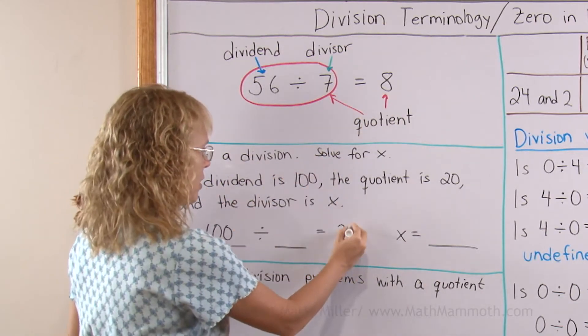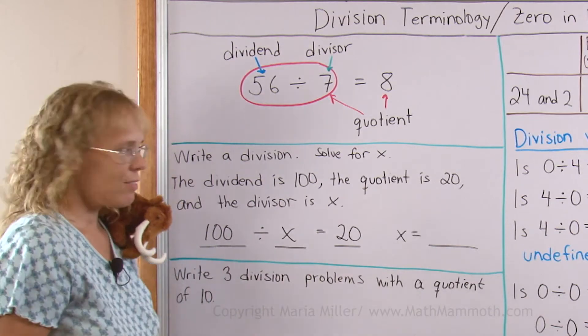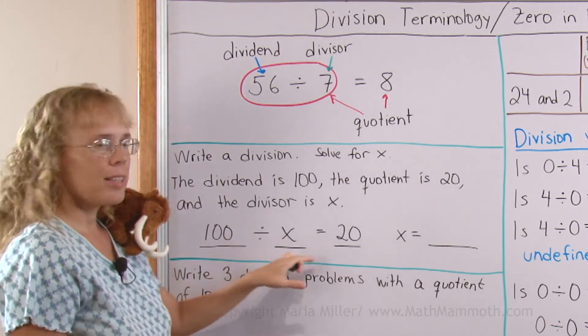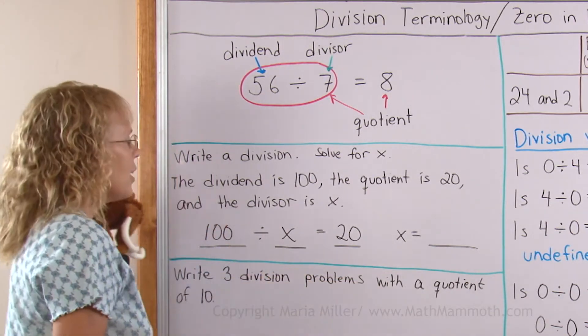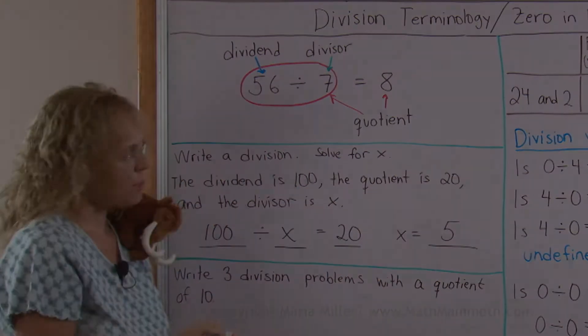And then quotient is going to be the answer after the equal sign over here. And the divisor is x. So I have an equation here. 100 divided by x equals 20. And it is easy to see that x has to be 5. So I have solved my equation.